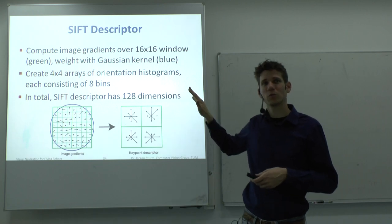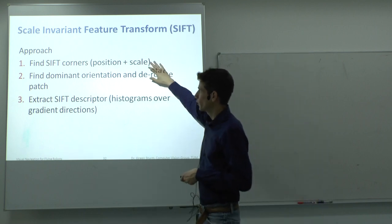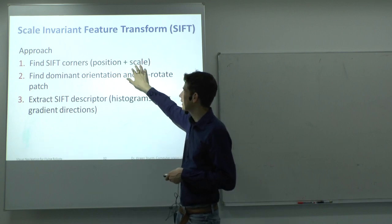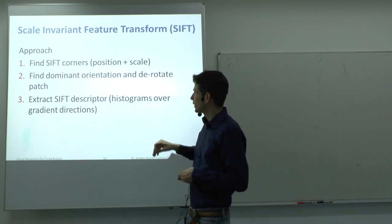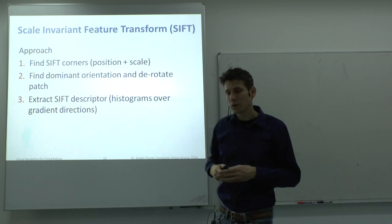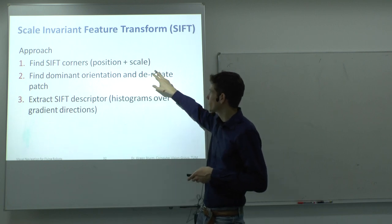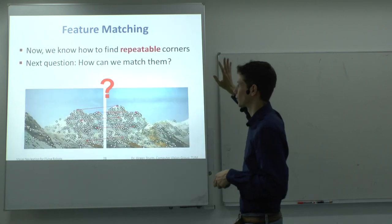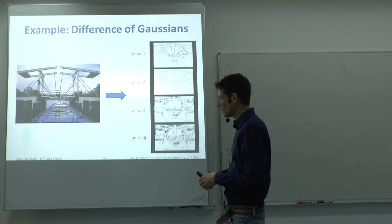So to recap: we first detect corners invariant to scale, getting position and scale. Then we find the dominant orientation by looking at gradients. The detector gives the x, y position and the scale level in the pyramid. At small sigma, the 16×16 patch is 16×16 real pixels; at sigma equals 4, it corresponds to a larger region on a higher level of the image pyramid, making it invariant to scale.